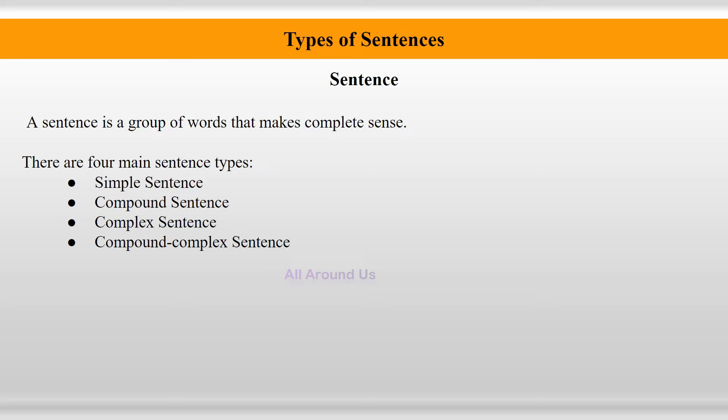Type of Sentences. What is a sentence? A sentence is a group of words that makes complete sense. There are four main types of sentences: Simple Sentence, Compound Sentence, Complex Sentence, and Compound-Complex Sentence.